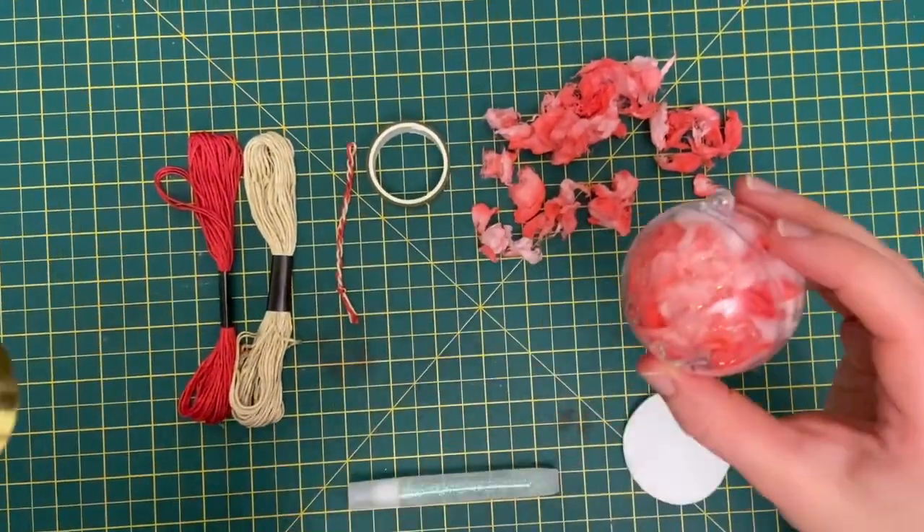There we go. Just closing it up. Okay. This kind of looks a bit magical already. Now we want to put the golden tape around this. We've pre-cut a thin slice of tape. So it's half the thickness, half the width.